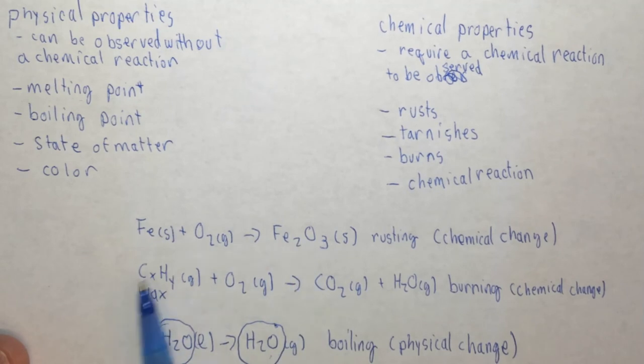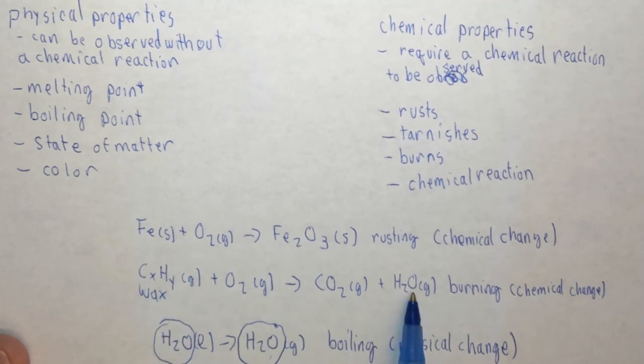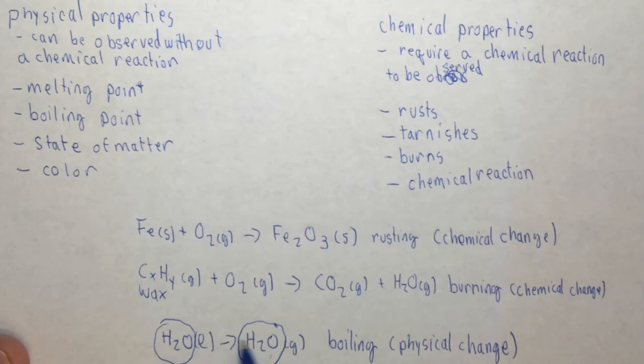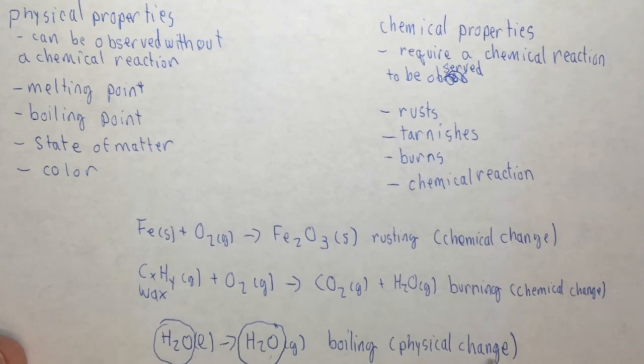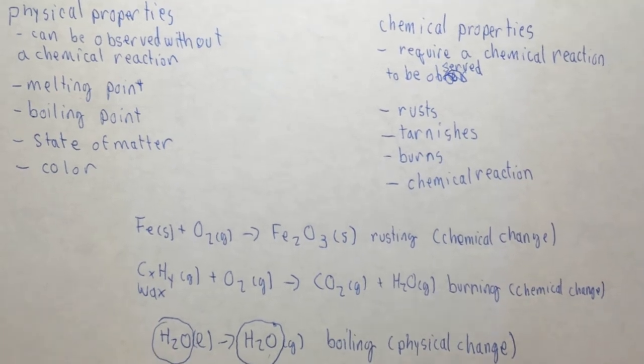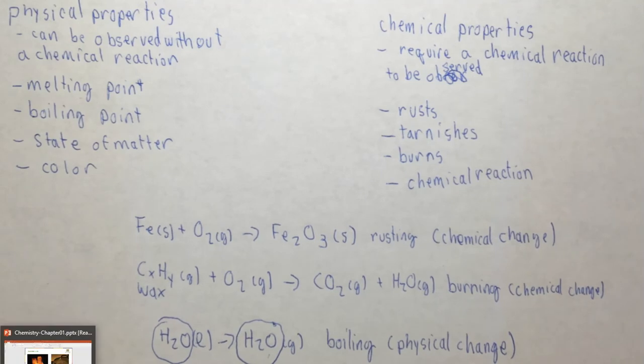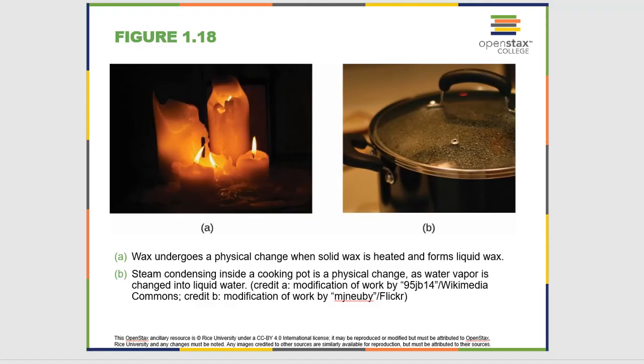Here, iron started bonding with oxygen. Here, carbon and hydrogen started bonding with oxygen. In this case, we didn't change anything. So this is a physical change. So we've now seen the difference between physical properties, chemical properties, physical changes, and chemical changes.